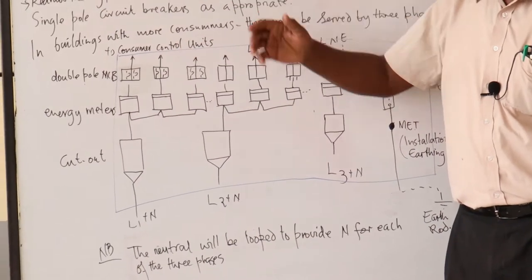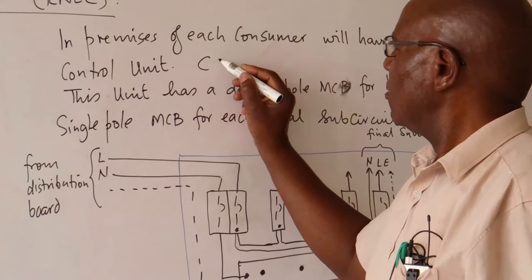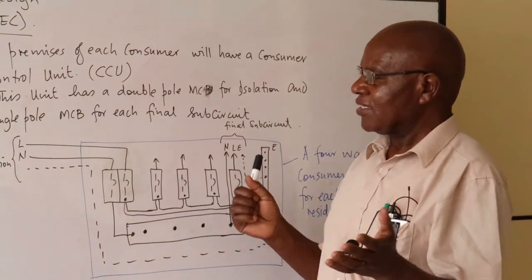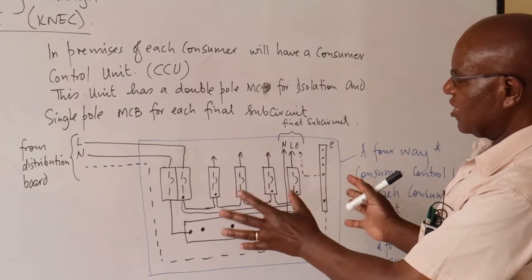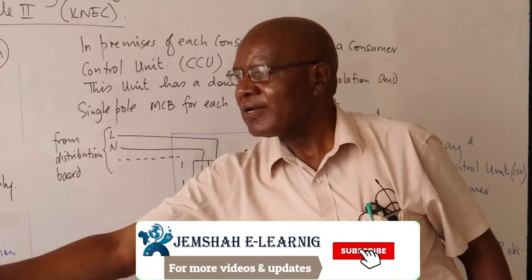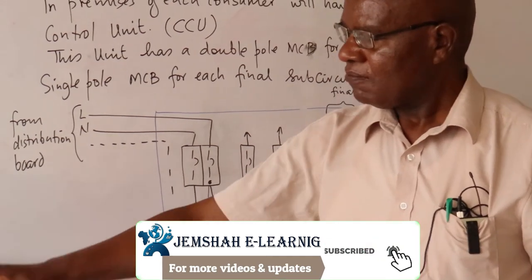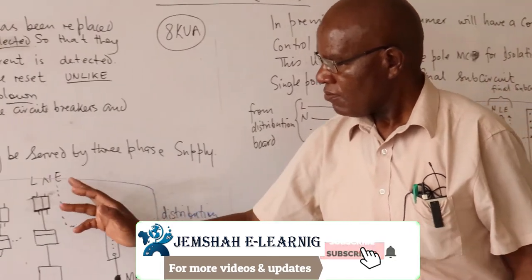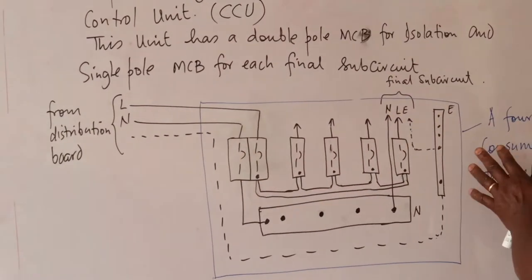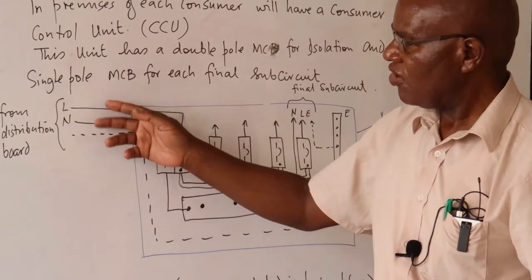From the distribution board, connections go to each consumer. In the premises of each consumer, we have what we call a consumer control unit, or CCU. In our discussion here, let's assume it is a miniature distribution for the power supply of a single unit. This consumer control unit receives cabling from the distribution board — the live, the neutral, and the earth. The sizing of the cables, by design, will depend on the load connected.